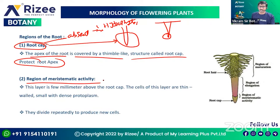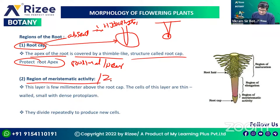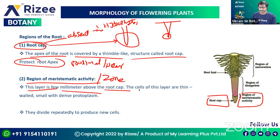Next is the region of meristematic activity. It is present in the proximal region — proximal means near. This layer is a few millimeters above the root cap. The cells of this layer are thin-walled, small, with dense protoplasm.